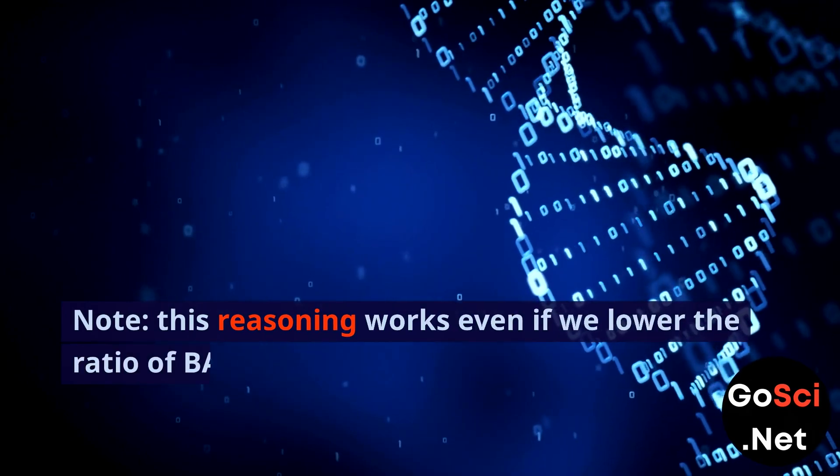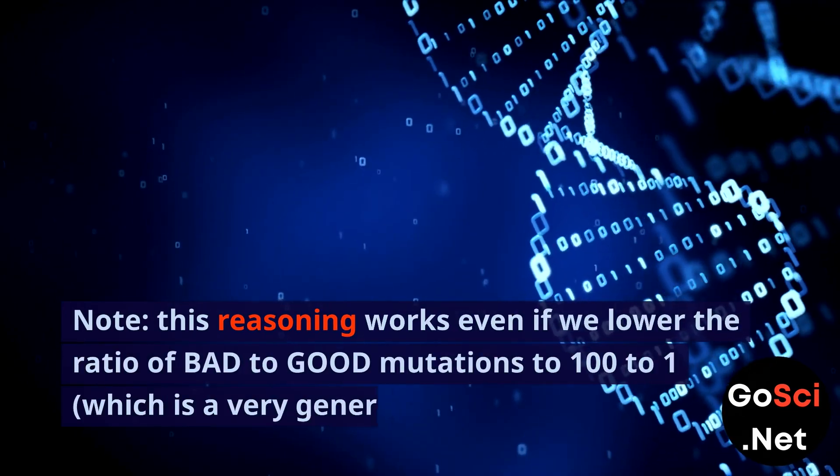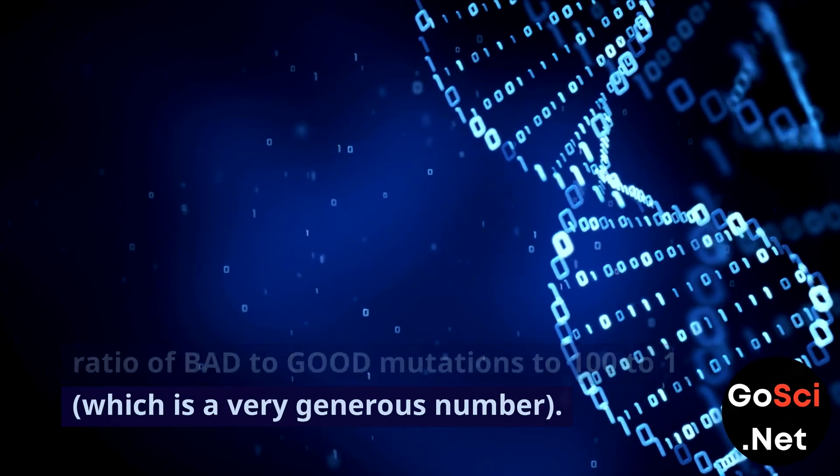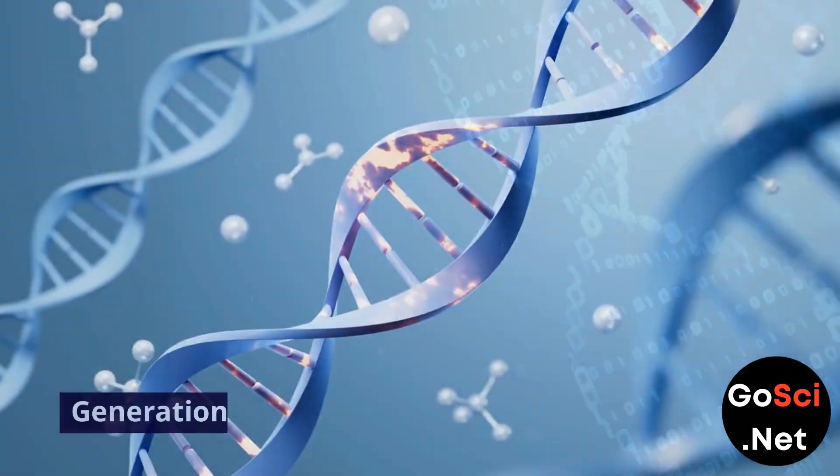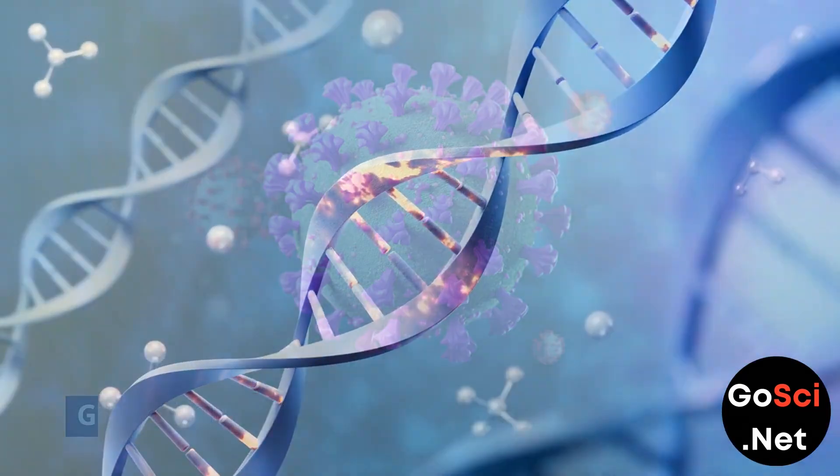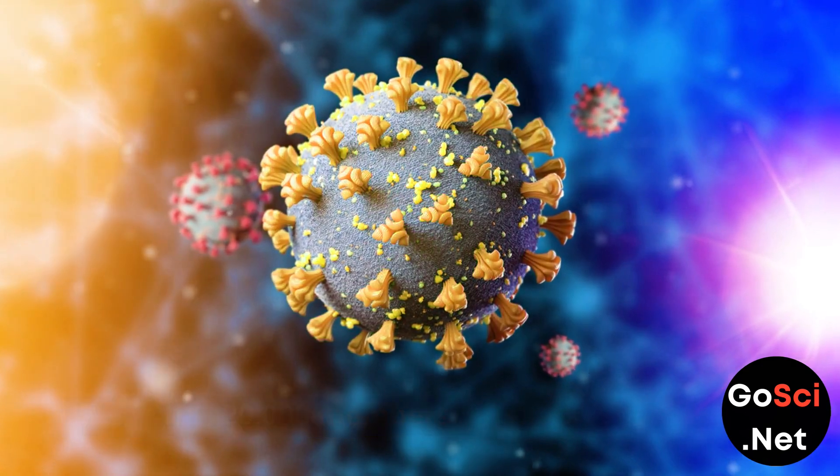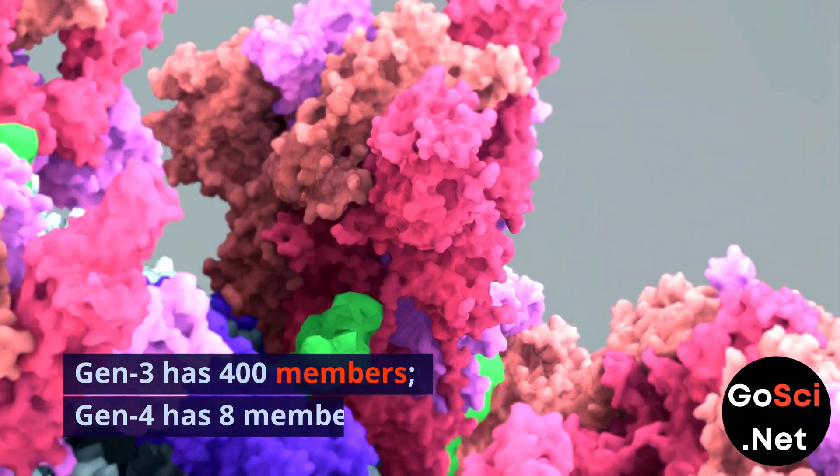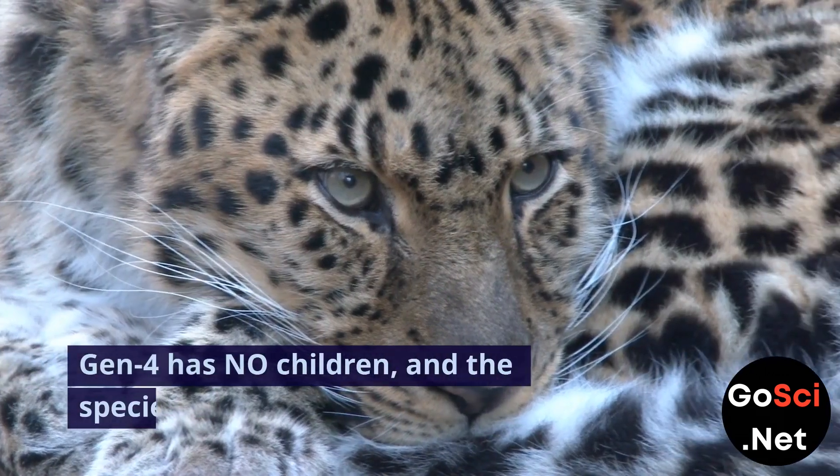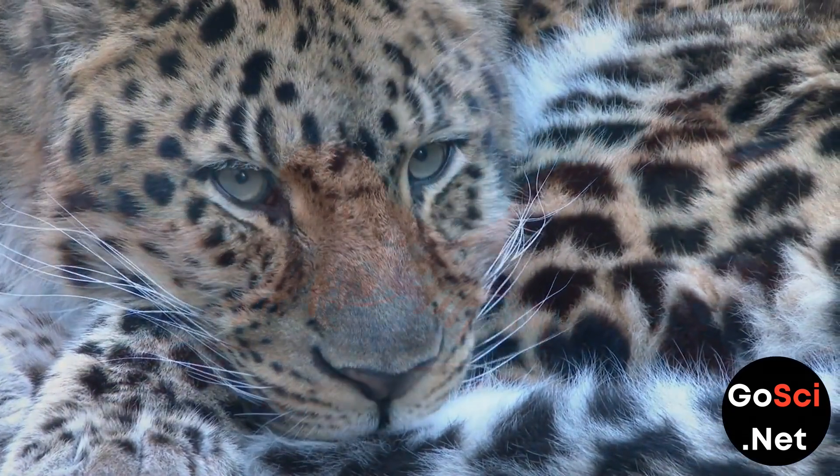This reasoning works even if we lower the ratio of bad to good mutations to 100 to 1, which is a very generous number. Generation 1 has 1 million members. Gen 2 has 20,000 members. Gen 3 has 400 members. Gen 4 has 8 members. Gen 4 has no children, and the species goes extinct.